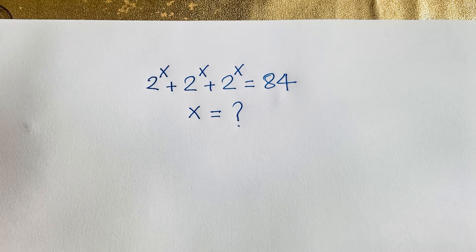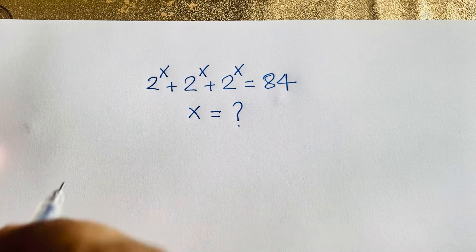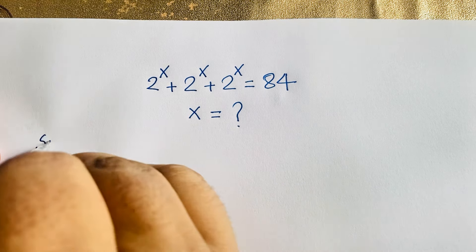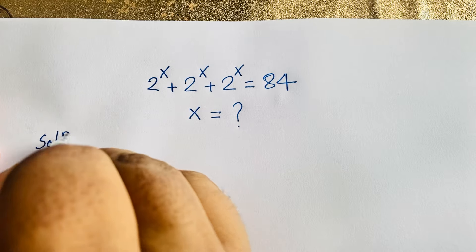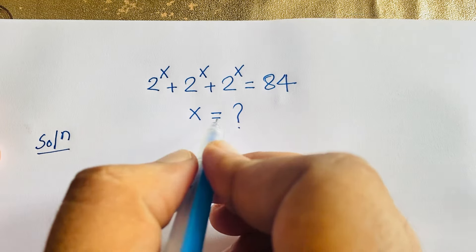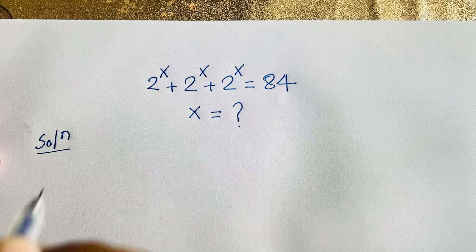The problem is: 2 to the power x plus 2 to the power x plus 2 to the power x is equal to 84. Find the value of x. This is a Math Olympiad question we'll solve step by step.